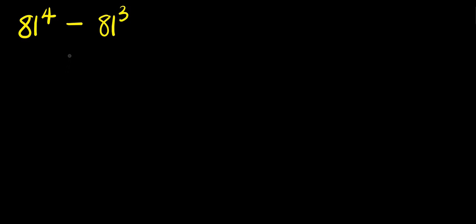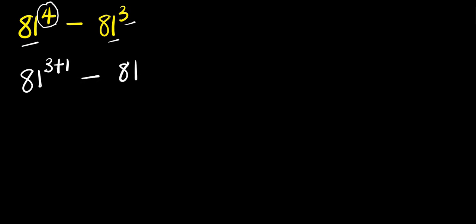How to evaluate with our calculator: 81 to the power 4 minus 81 to the power 3. We can express the exponent 4 as the summation of 3 and 1, giving us 81 to the power 3 plus 1, minus 81 to the power 3.